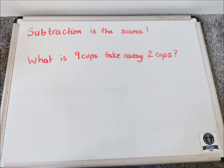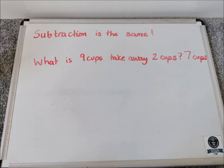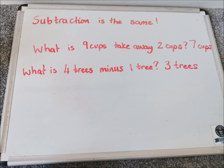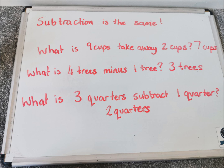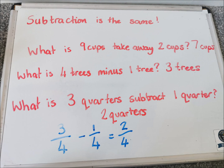We're going to go on to subtraction, which is exactly the same except instead of adding, this time we're going to be subtracting — taking away. Let's have a quick look at some non-fraction examples. What is nine cups take away two cups? Seven cups. What is four trees minus one tree? Three trees. What is three quarters subtract one quarter? Two quarters. It's just the same no matter what it is you are taking away. The denominator doesn't change — it's the numerator, that number on top, that you're only concerned about.